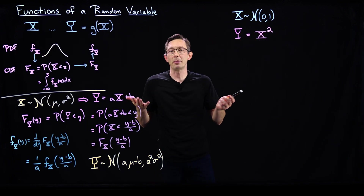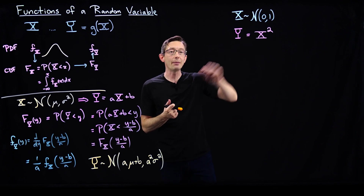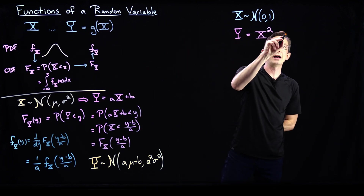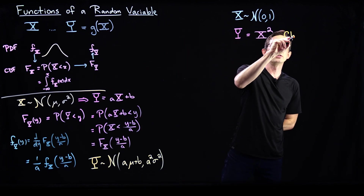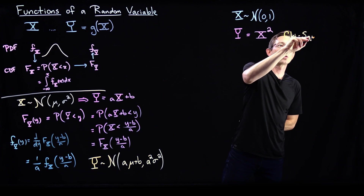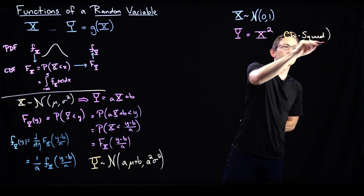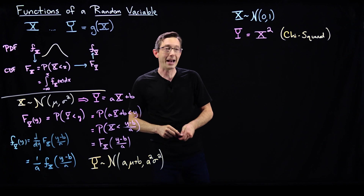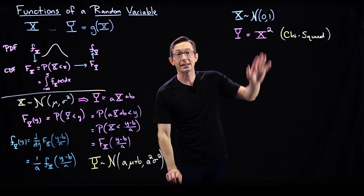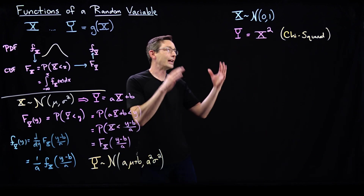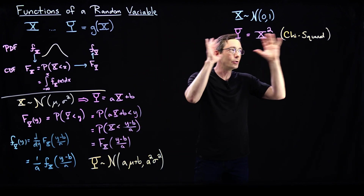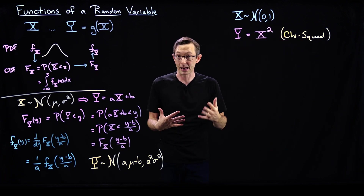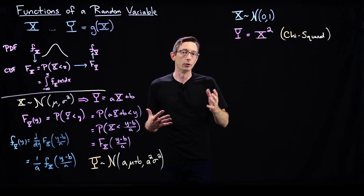The name of this is called the chi-squared distribution, so y follows what's called the chi-squared distribution. If you've done any statistics in the past, you've almost certainly come across this chi-squared distribution. It's the most useful distribution for hypothesis testing, or one of the most useful.